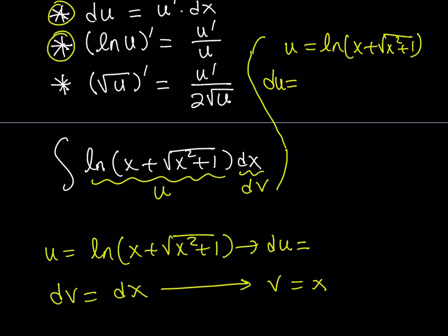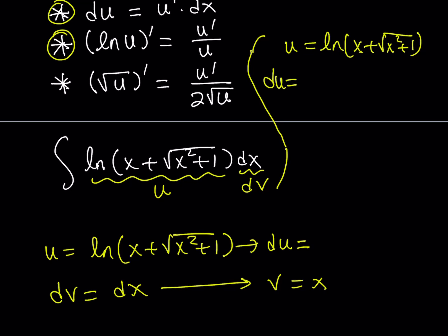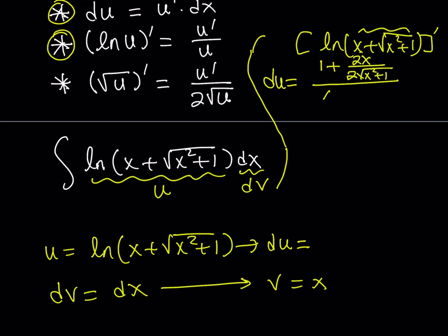Using u prime over u, and because it's a sum, the derivative of x is 1. The derivative of the square root function is the derivative of the inside divided by 2 times the square root. So the derivative of x squared plus 1 is 2x, divided by 2 times the square root of x squared plus 1. That's u prime, and then I divide it by u, which is the original function. The denominator is x plus the square root of x squared plus 1.